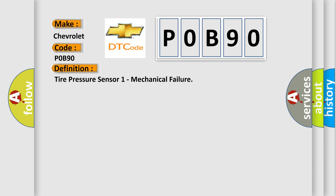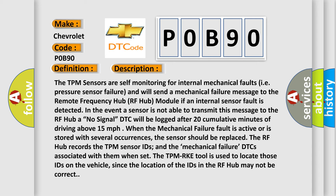Here is a short description of this DTC code. The TPM sensors are self-monitoring for internal mechanical faults, such as pressure sensor failure, and will send a mechanical failure message to the RF hub module. If an internal sensor fault is detected, or if a sensor is not able to transmit this message to the RF hub, the DTC will be logged after 20 cumulative minutes of driving above 15 miles per hour when the mechanical failure fault is active or stored with several occurrences. The sensor should be replaced. The RF hub records the TPM sensor IDs and the mechanical failure DTCs associated with them when set.